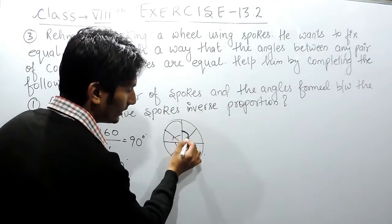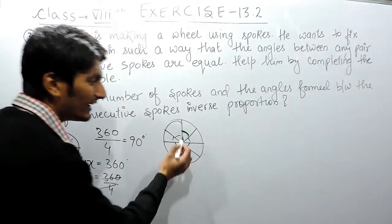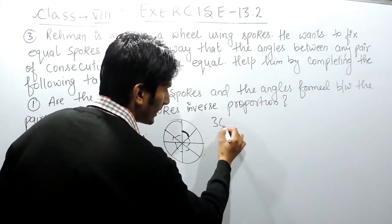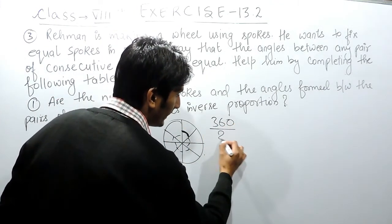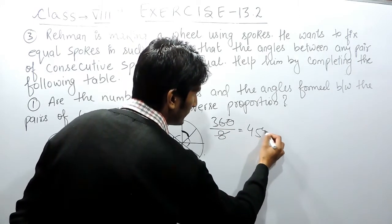If I want to calculate or find the value of this angle, what I have to do is divide 360 by 8. So this will be equal to 45 degrees.